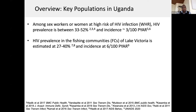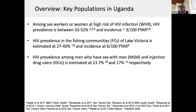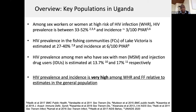In the fishing communities, the prevalence is also estimated at about 27 to 40%, and incidence at about 6 per 100 person-years at risk. There have been some studies done among men who have sex with men and injection drug users in Uganda, estimating HIV prevalence at about 13.7% and 17% respectively. So HIV prevalence and incidence is really very high among women at high risk and the fisher folk relative to the general population.